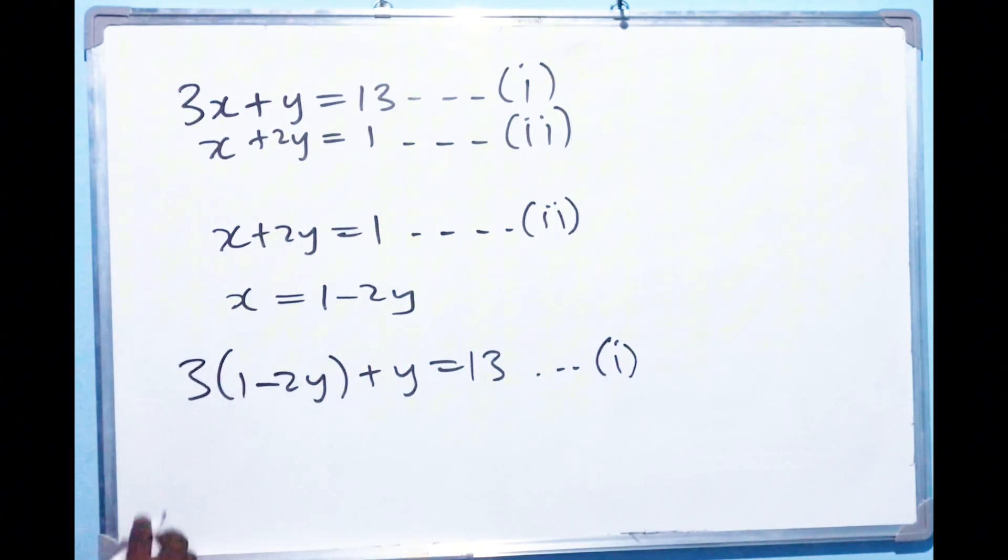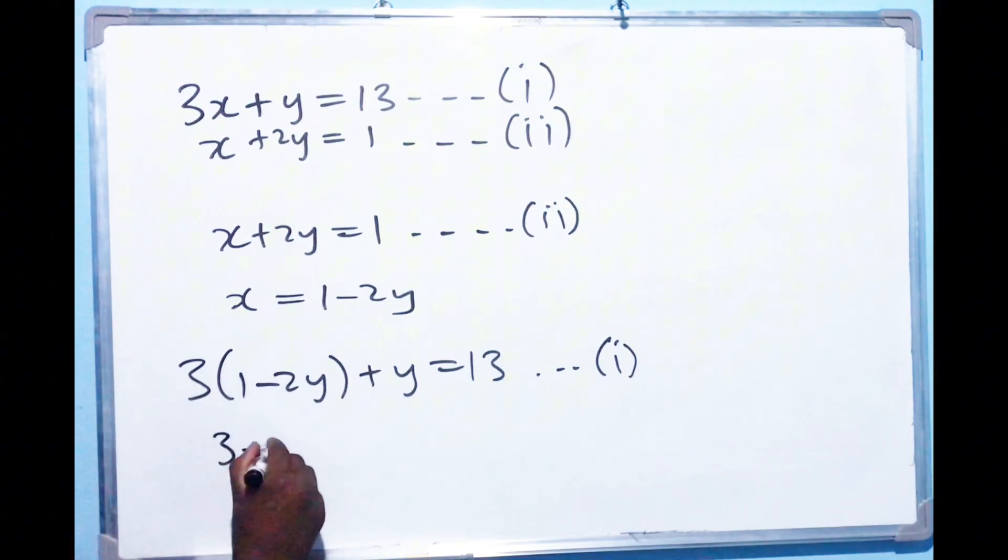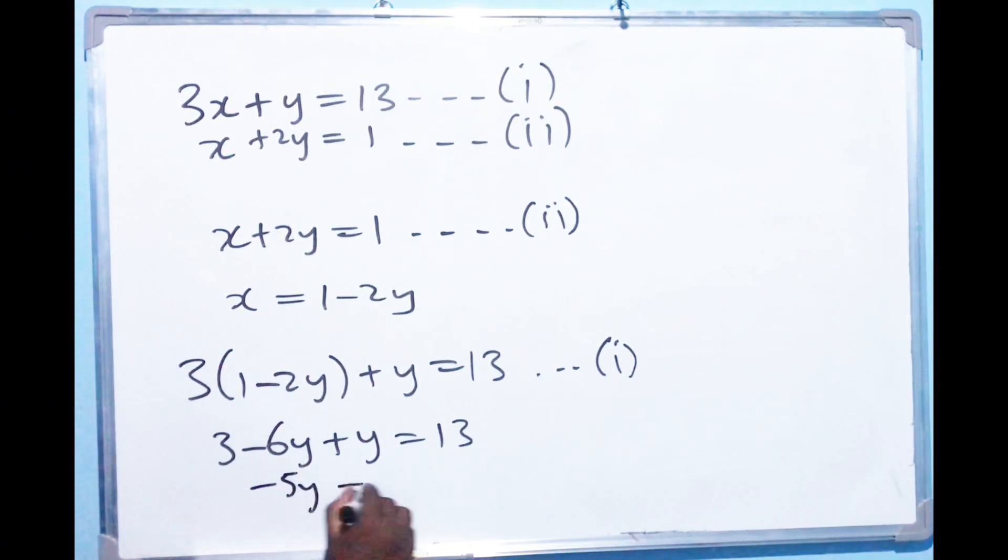So with that done now, we are going to simplify this. So 3 times 1 we get 3, 3 times that we get 6Y plus Y equals to 13. Now we can collect the like terms. So negative 6Y plus Y give us negative 5Y, which is equal to 13 minus 3 to be 10.